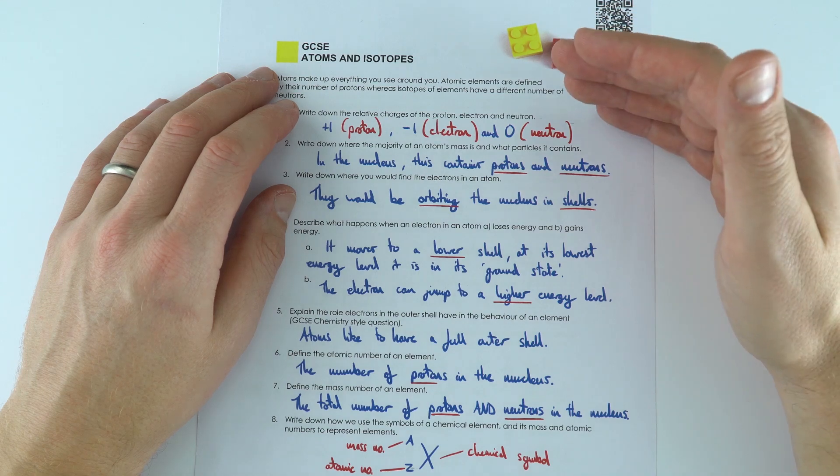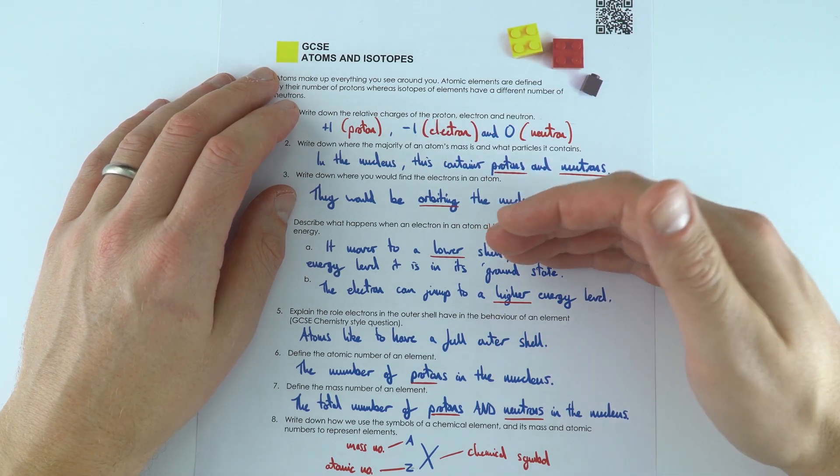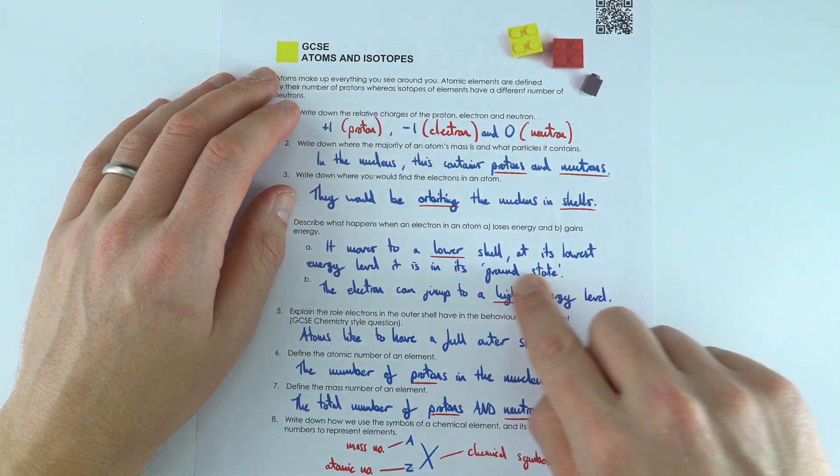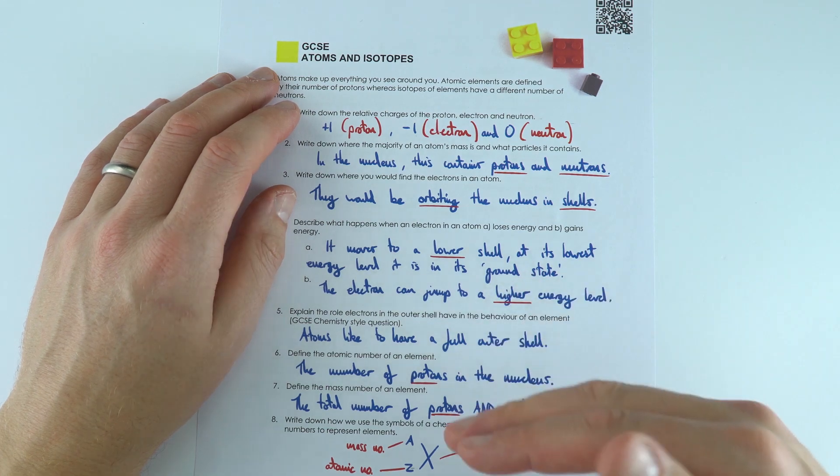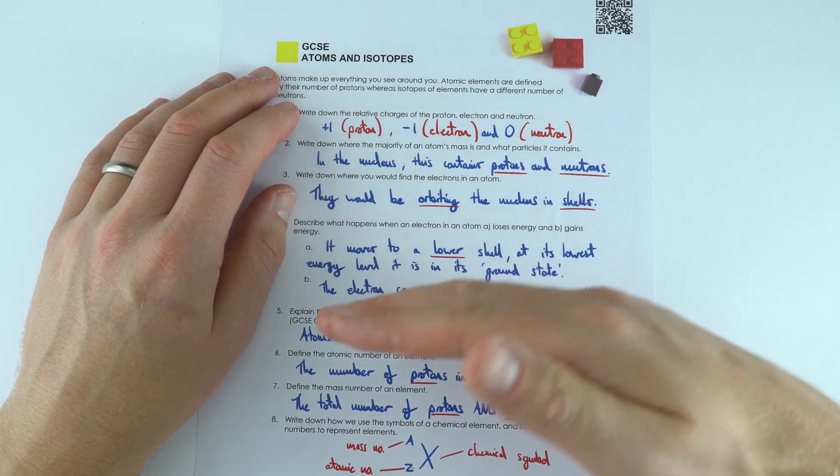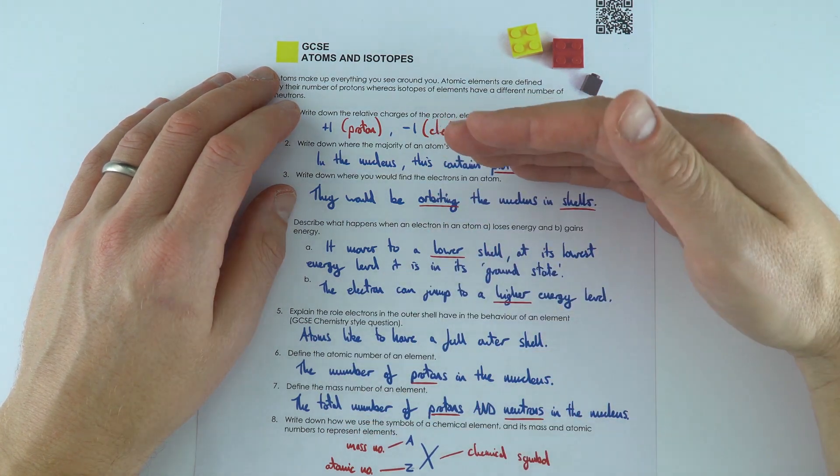When they're de-energised or de-excited they drop down to a lower shell, often called its ground state and its lowest energy level, and then if you excite the atom we can get the electrons to go to a higher energy level.